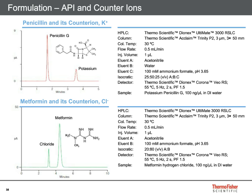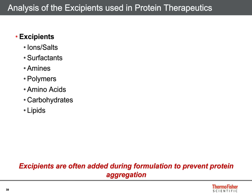Unwanted aggregation is a major degradation pathway of protein therapeutics during storage. Stabilization of these protein formulations can be enhanced through the addition of specific excipients such as counter-ions, surfactants, polymers, amino acids, and sugars. The following slides relate to the analysis of these excipients using various HPLC methods with charged aerosol detection.